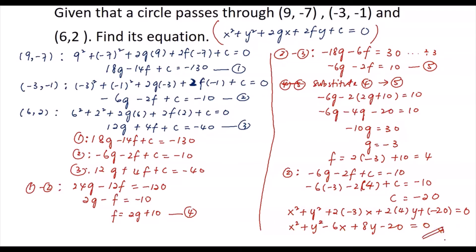If you would like the equation in standard form — (x - h)² + (y - k)² = r² — you may continue from this general form equation using the method of completing the square to obtain the standard form. Thank you for watching.